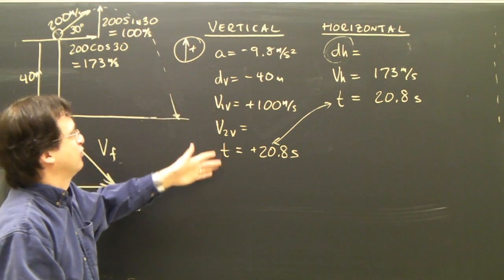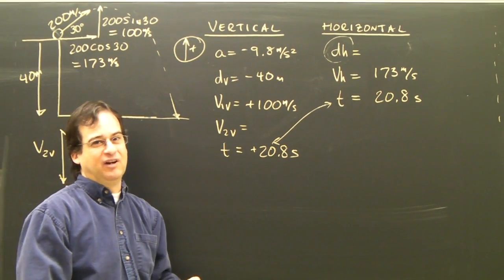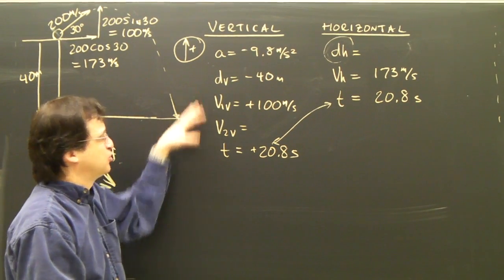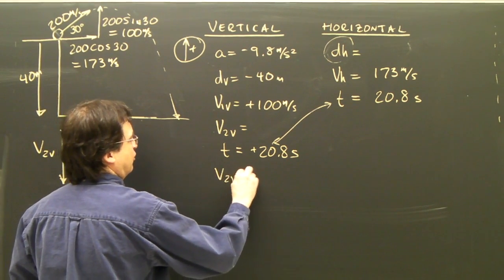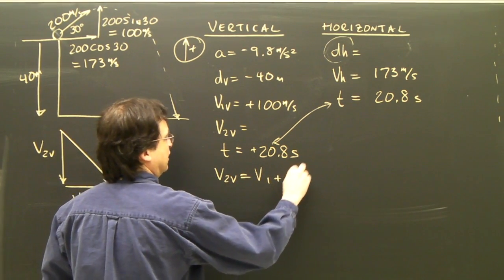Well, I look at my vertical column, and I've got one, two, three, four, more than enough variables to find it. So I have a choice of a couple of equations. I'm going to use V2 vertical equals V1 plus AT.